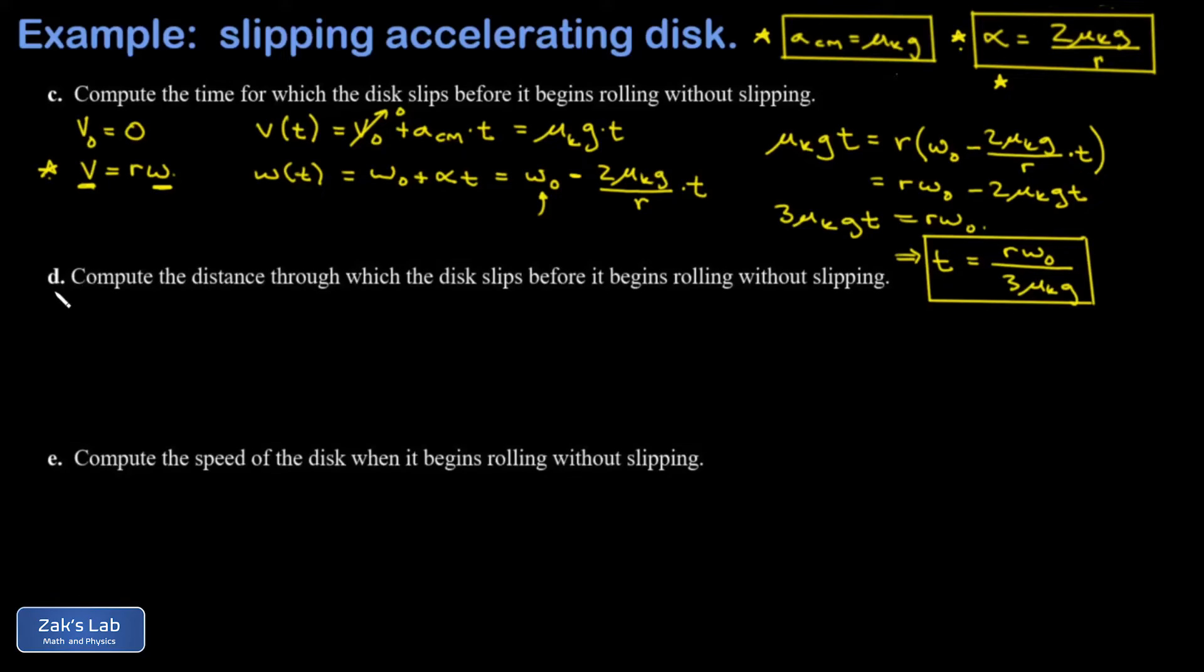Next, I want to get the distance through which the disk is slipping before it begins rolling without slipping. So now I know the time it does this, and I know the acceleration during that time. That's the a center of mass I computed originally. So I just use a kinematics equation for this. It's just x equals x₀ plus v₀t plus 1/2 at squared. And the initial position I'm calling is 0. The final position in the diagram was actually called little d, so I'm going to replace it with that. And then my initial translational velocity was 0. So I get little d is equal to 1/2 times the acceleration, which is μₖg, multiplied by the time for the acceleration squared. So that's rω₀ over 3μₖg all squared.